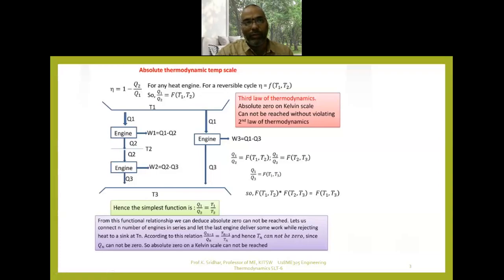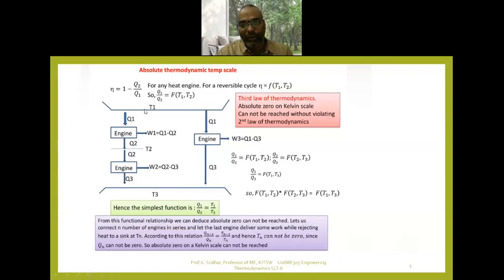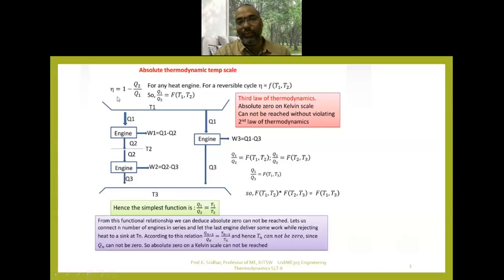For an irreversible heat engine the efficiency formula is (Q1 minus Q2) by Q1, or 1 minus Q2 by Q1. For a heat engine operating on a reversible cycle, Q is to be replaced by temperature. So efficiency equals 1 minus T2 by T1, that is (T1 minus T2) by T1. That is the absolute thermodynamic temperature scale.